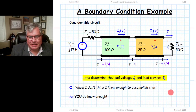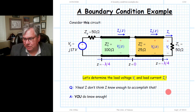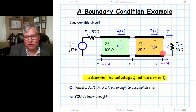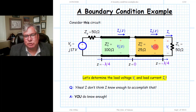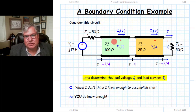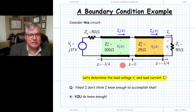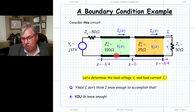Now we're going to put together all the pieces of everything we've learned up to this point. We have a source, which we understand. We have a load, connected to a transmission line — a source connected to a transmission line. And we have an interface between two dissimilar transmission lines. So we have everything in the circuit.